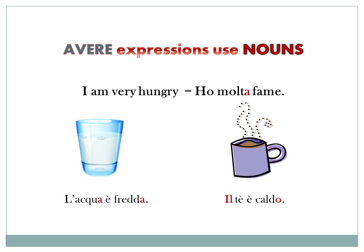Remember that since avere expressions employ nouns, if you wish to intensify the statement with the insertion of molto, molto will function as a four-form adjective modifying the noun in the expression. So 'I am very hungry' will be rendered as ho molta fame — literally, 'I have a lot of hunger.' Molto will change to molta in this case because fame is a feminine singular noun.